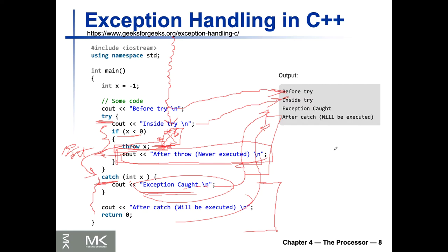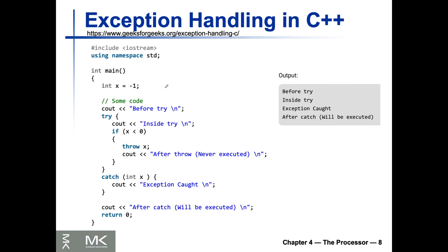If you just write throw and no catch, your code will crash and you see no output. The statements before the throw will still print — up to the throw, everything was fine. Now let's see how we're going to handle exceptions in RISC-V.